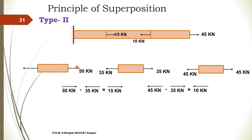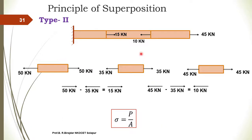Once we calculate the force on this body, for static equilibrium we apply an equal and opposite 50 kN. This completes the free body diagram of Type 2 with one fixed end. Once you have the forces acting on each body, you can calculate the stress induced in each body using the equation: stress equals load divided by area — separately for the first, second, and third body.